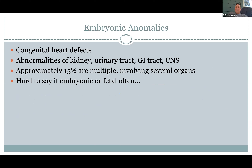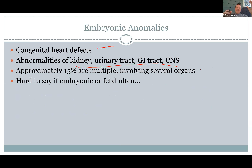Embryonic abnormalities: you often see congenital heart defects — holes in the heart that are not supposed to be there. Some of that can even be corrected with surgery in utero, which is fascinating. Kidney, urinary tract, GI, and central nervous system abnormalities all happen. Sometimes it's hard to say whether this was an embryonic or fetal issue because we don't know exactly when it happened.